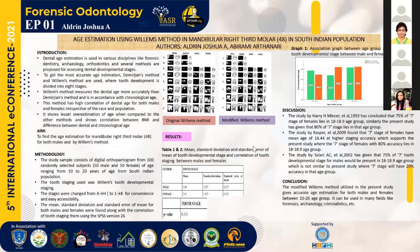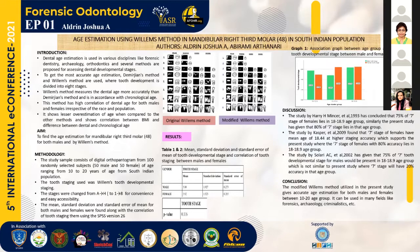The results of the present study showed that if the tooth is in the seventh stage — open apexis — there is 80% tooth developmental stage accuracy for females in the age group 18 to 18.9, and 60% stage accuracy for males in the 19 to 19.9 age group. This signifies that females have faster tooth mineralization than males, which has implications for many medical and legal activities.